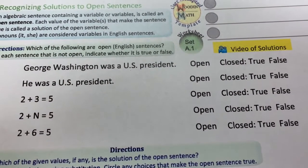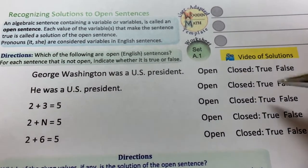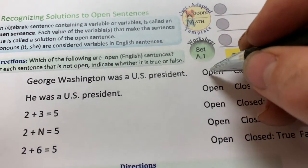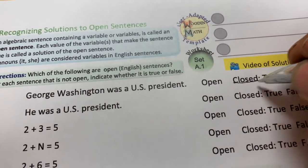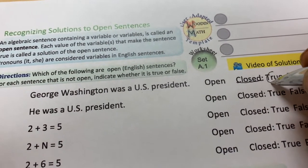George Washington was a U.S. president. Is that an open sentence? Well, there's no pronoun in here, so it's not open. That's closed. And that is true.